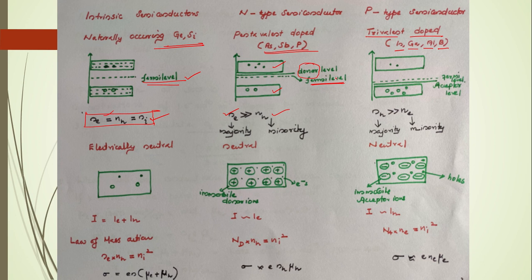The donor energy level is very close to the conduction band. Without requiring significant extra energy, electrons from donor ions can enter the conduction band. In p-type semiconductors with trivalent impurities, the number of holes in the valence band is greater than the electrons in the conduction band. Hence the Fermi level takes a position closer to the valence band, as does the acceptor level. The majority charge carriers are holes and minority are electrons.